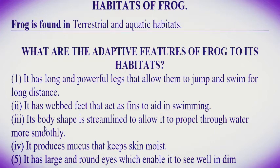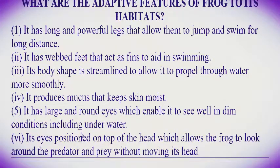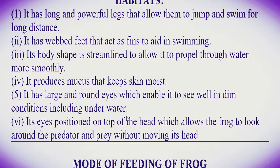Number four: it produces mucus that keeps the skin moist. Number five: it has large protruding eyes which enable it to see well in dim conditions, including underwater. Number six: its eyes are positioned on top of the head, which allows the frog to look around and spot prey without moving its head. These are the adaptive features for living in terrestrial and aquatic habitats.